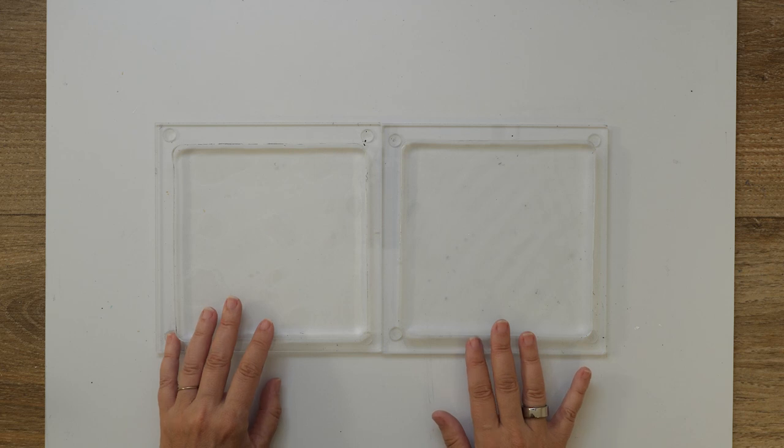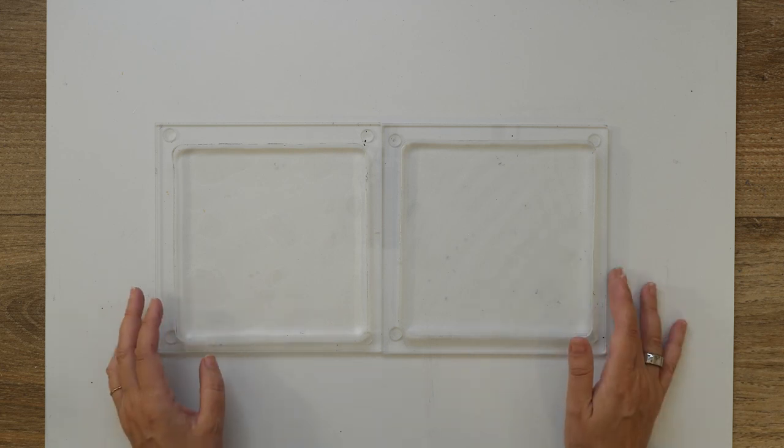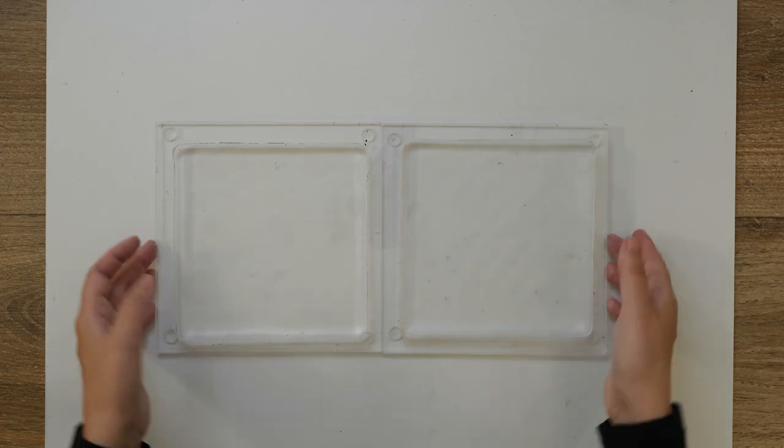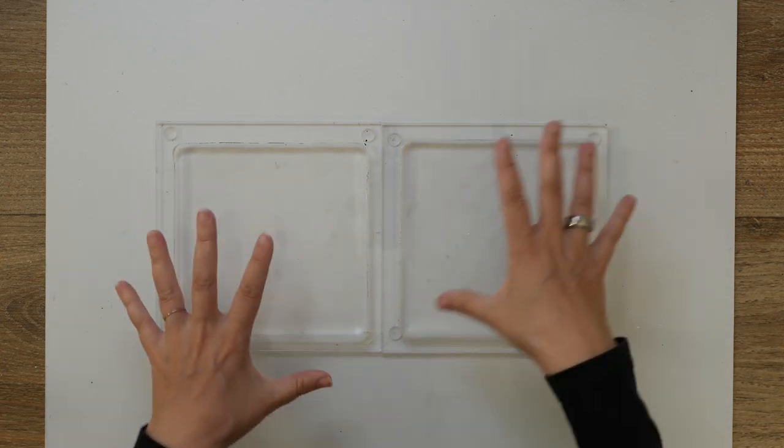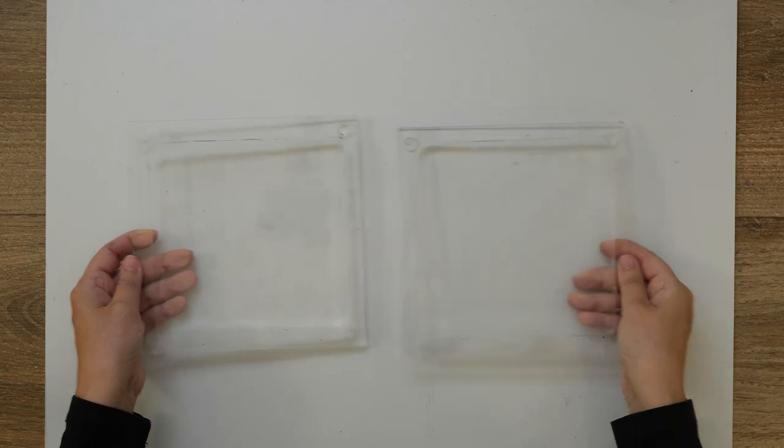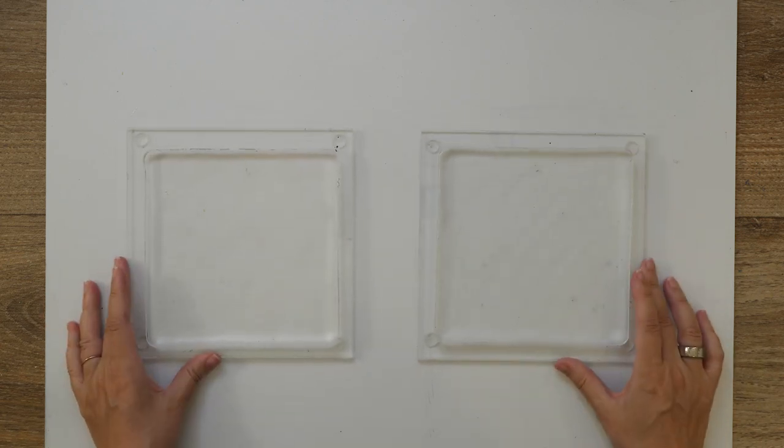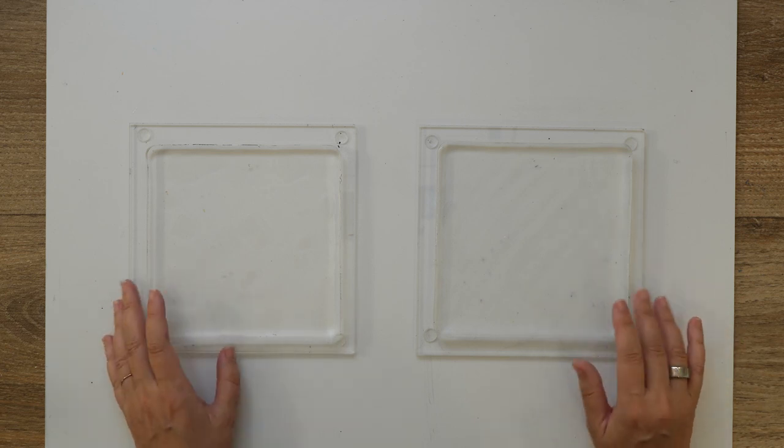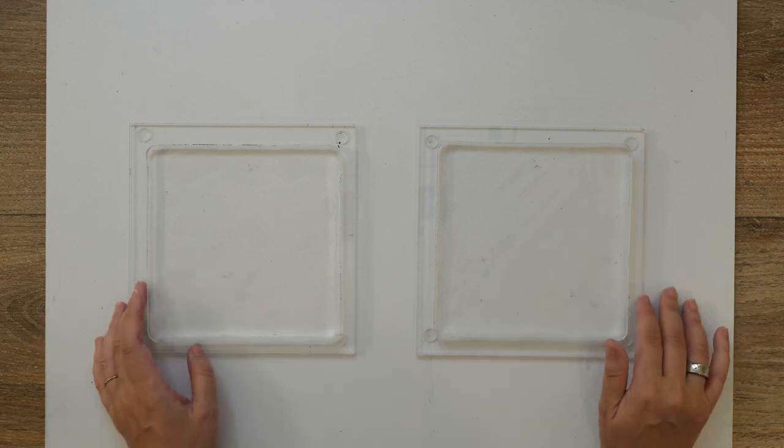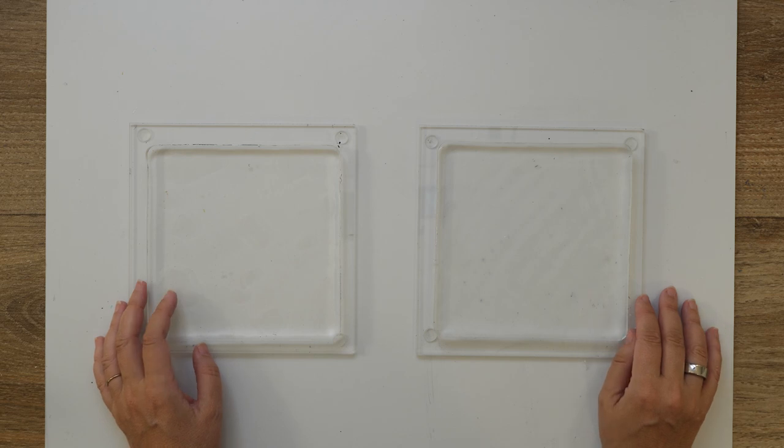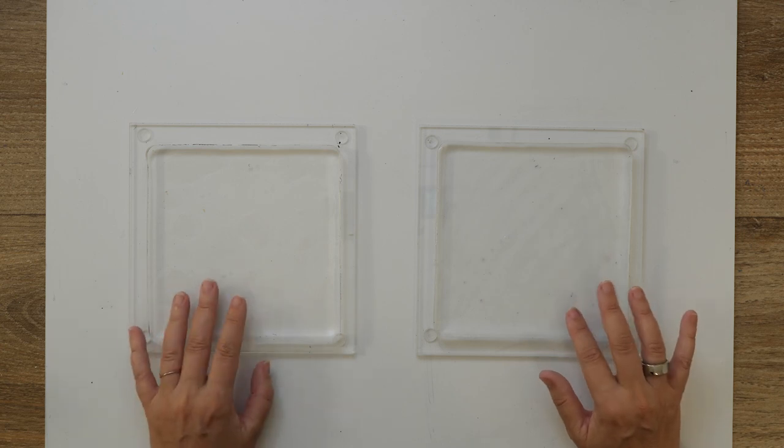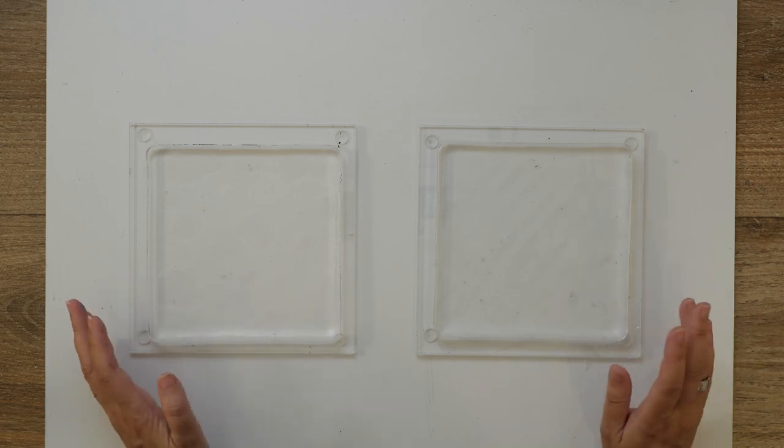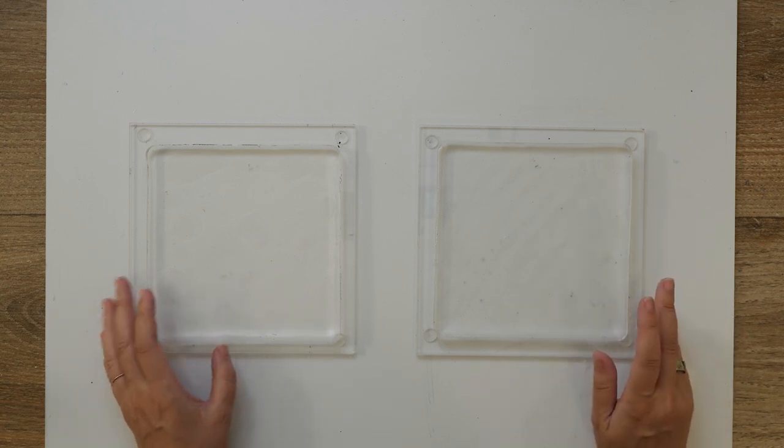For today my plan is to create some kind of a diptych, so two prints that belong together. I have two square shaped gel plates here, smaller than the ones I used in the previous two videos. These are six by six inches, so that's about 15 by 15 centimeters.